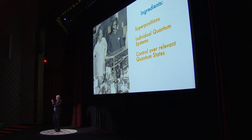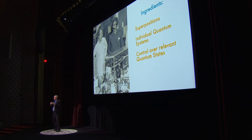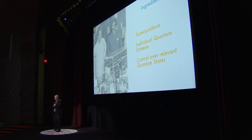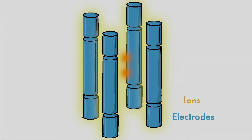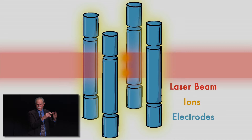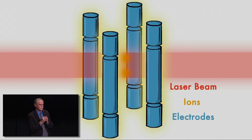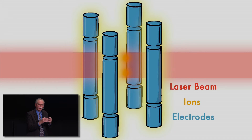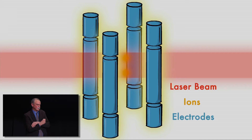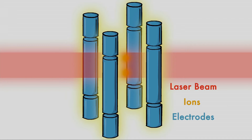So what do we need? We need to make these superposition states, work with individual quantum systems — in our case, atoms — and apply control. What you see in this picture is an electrode structure, these blue rods. We use charged atoms — atomic ions — and we apply electric fields to these rods, and we can grab onto the charge and hold the charged atoms in one place. In the middle of the picture you see some yellow-orange blobs — in this case meant to represent two atoms, our atomic ions. It turns out we can manipulate the properties of these systems with laser beams.